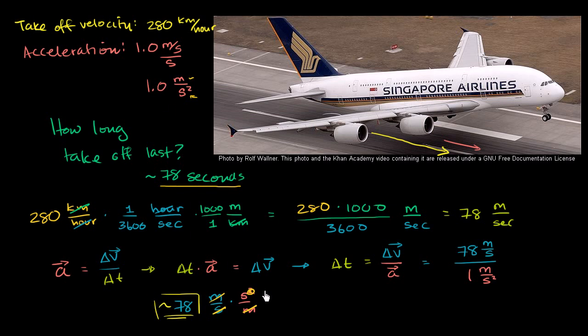So we want to figure out the displacement, or how far does this plane travel as it's accelerating at 1 meter per second squared to 280 kilometers per hour, or to 78—where did I write it? To 78, I converted it over, right over here, as it accelerates to 78 meters per second. How much land does this thing cover?